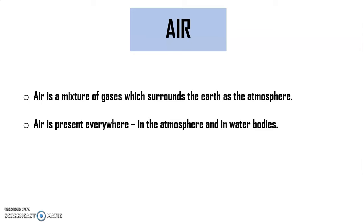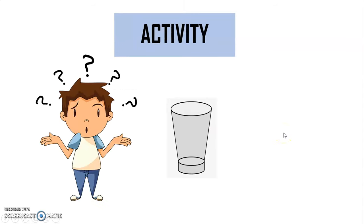So air is a mixture of gases which surrounds the earth as the atmosphere. Air is present everywhere. If anybody asks you about the occurrence of air? Air is present everywhere in the atmosphere and also in the water bodies.